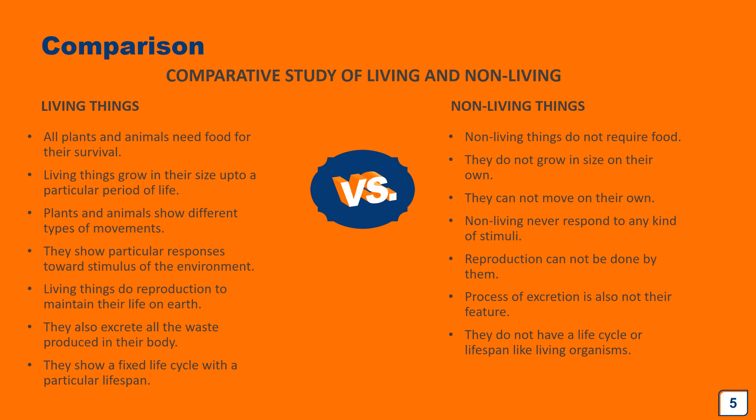The next important characteristic is reproduction. Since all living things die after a particular duration, life on earth is maintained through reproduction. Living organisms reproduce by different methods. Animals like birds lay eggs — they are oviparous. Animals like buffalo, cats, dogs, and human beings give birth to a fully developed young one — they are viviparous. Reproduction cannot be done by non-living things.